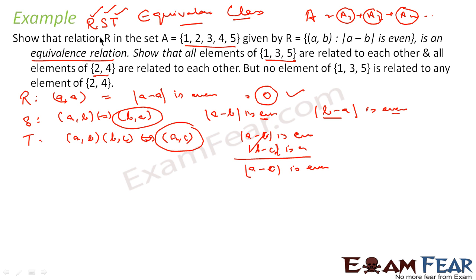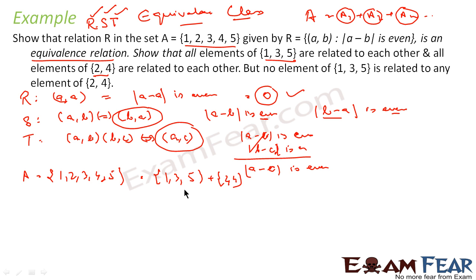First part is done. Since it is an equivalence relation, it will break this set into multiple equivalence classes. Set A is nothing but {1, 2, 3, 4, 5}, and this has been broken into {1, 3, 5} plus {2, 4}. All the elements are there — so it is two classes: A1 and A2. If you see A1, all the members satisfy the condition. For example, 1 minus 3 mod is minus 2 mod, which is even.